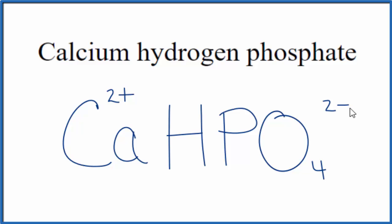2-plus, 2-minus, that adds up to zero, that gives us a net charge of zero. So this is the formula for calcium hydrogen phosphate, CaHPO4.